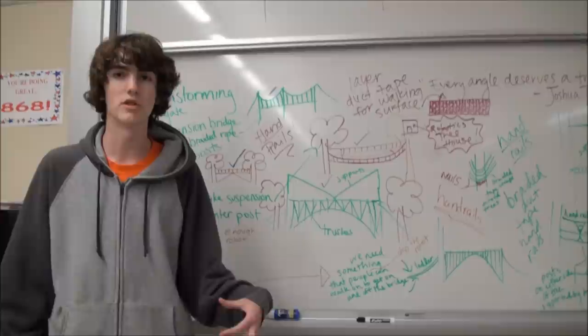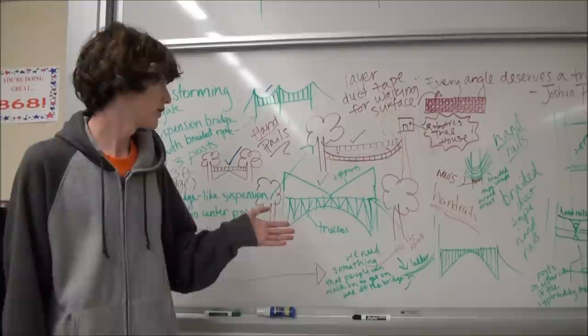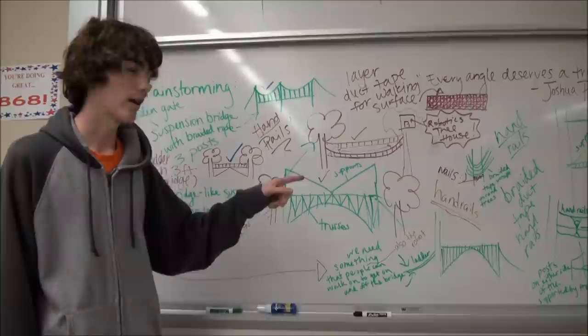Some things we went over were basic types of bridges like suspension bridges, truss bridges, and then also walking surface. We thought of we could do a braided surface or a thatched surface. There's many different designs for that.